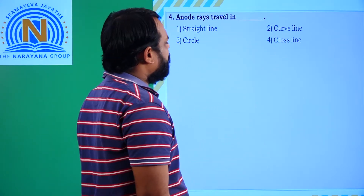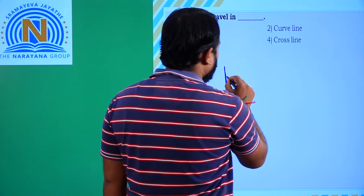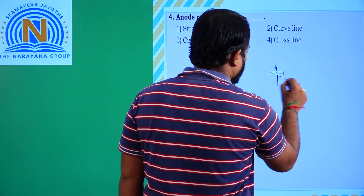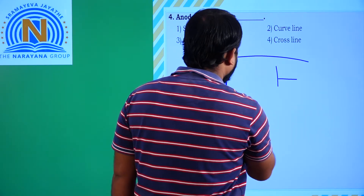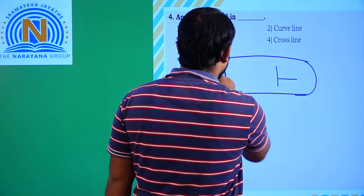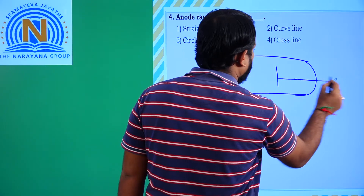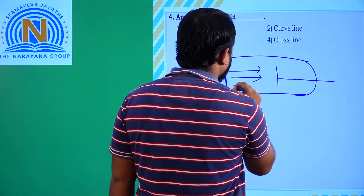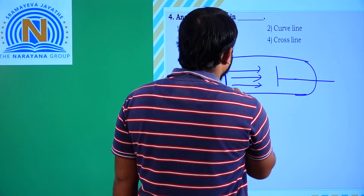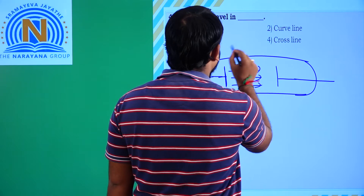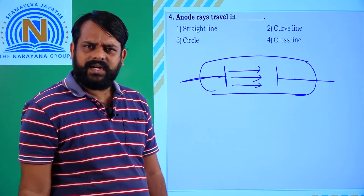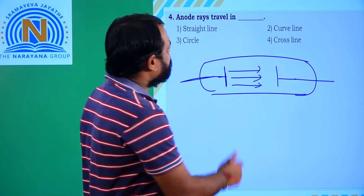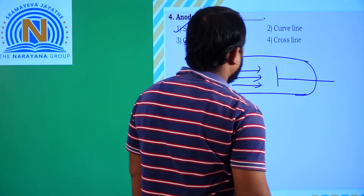Anode rays travel in? Generally, whatever may be the rays — anode rays or cathode rays — all the rays travel in a straight line only. So anode rays travel in a straight line. The first option is correct.